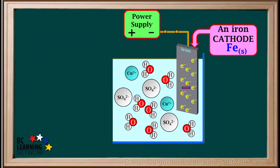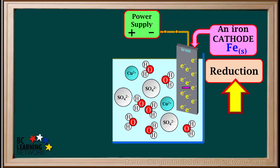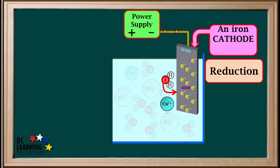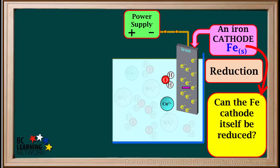Now we'll focus on the iron cathode. Remember, reduction takes place at the cathode. So water may be reduced, or copper 2+ ions may be reduced. But in this type 3 cell, the cathode is not inert — we have an iron cathode. So the question we ask ourselves is: can the iron cathode itself be reduced?